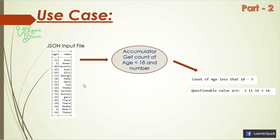The use case we are taking today uses a JSON file with two columns — name and age. Our requirement is to find the data quality of the input file: we should have age greater than 18, and if age is less than 18 then it is considered an invalid record. We need to find how many invalid records exist and the range of questionable values. For this we are going to use both a built-in accumulator and a custom string-type accumulator.